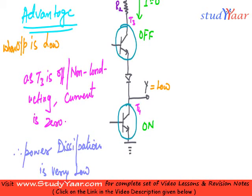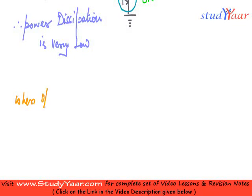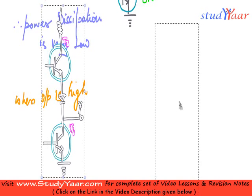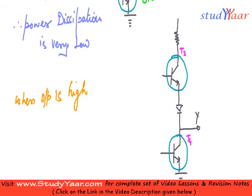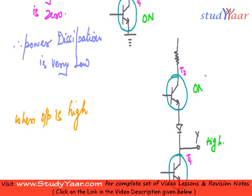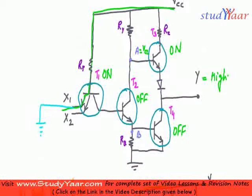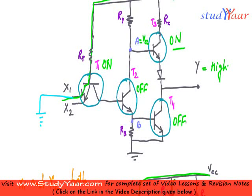This was when output is low. Now, when your output is high, let's see what happens. What I am saying is this output is high. When this is high, T3 is on and T4 is off. You can take a look over here — when this is high, T3 is on and T4 is off.